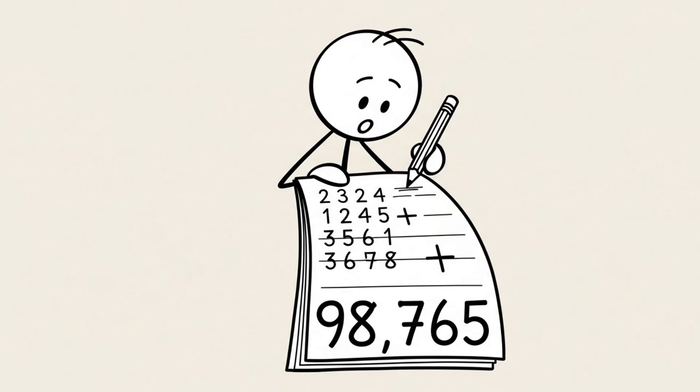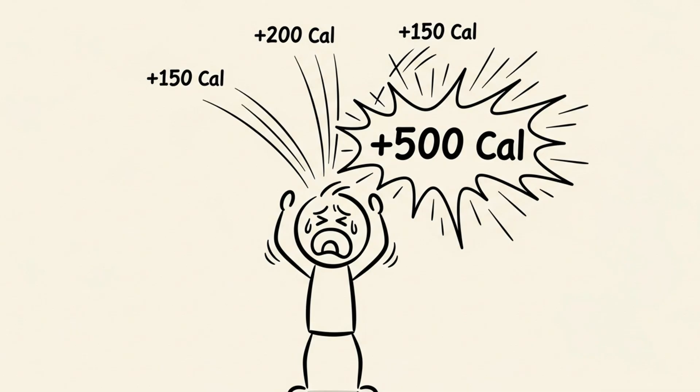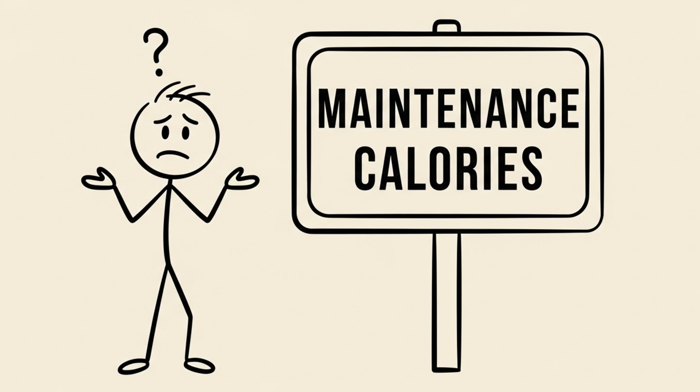These add up. You calculated a 500-calorie deficit, but 150 calories from cooking oil, 200 from your latte, and 150 from salad dressing, and bam! Your 500-calorie deficit is gone. You are at maintenance, and you don't even know it.